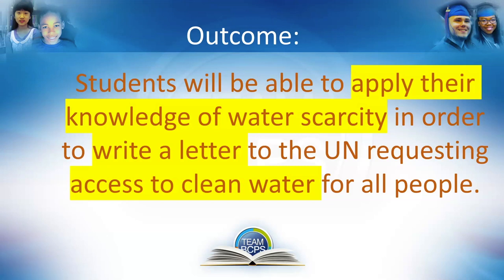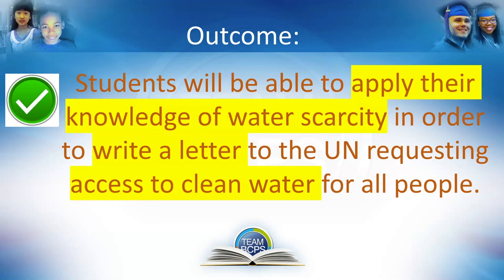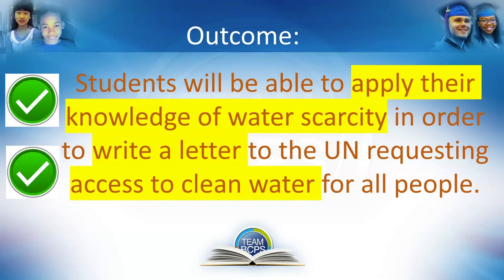Let's go back to our outcome for today. Did you apply your knowledge of water scarcity? Yes, you did. What did you use that knowledge to do? You wrote a letter to the UN. And why did you write a letter to the UN? Requesting access to clean water. Great job. Now, take a piece of paper or write an email and write a letter to the Secretary General of the United Nations asking that the UN solves the problem of water scarcity so that all people in the world have access to clean water. Great job! I'll see you next time. Bye!